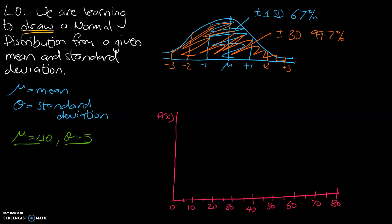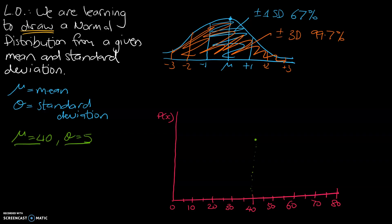So our mean is 40, so I'm going to draw a dot that relates to 40. And from that, we know that 99.7% of the data is within three standard deviations of that mean. So there's plus 1, there's plus 2, and there's plus 3. So the data should go up to there.